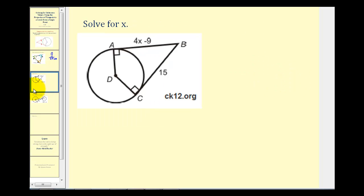Here's our second example. And again if we consider point B, segment AB is going to be congruent to segment CB because they're both tangent to the circle and they share the end point B. So we can set up an equation to solve for X. Four X minus nine must equal fifteen since the segments are congruent.